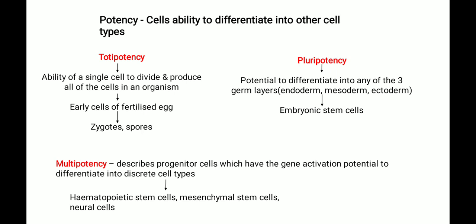Pluripotency is the potential to differentiate into any of the three germ layers. The ectoderm gives rise to epidermal tissues and nervous tissues. The endoderm forms the inner stomach lining, gastrointestinal tract, and lungs. The mesoderm forms muscle, bone, blood, and urogenital structures. So pluripotent cells have the ability to differentiate into all three germ layers.